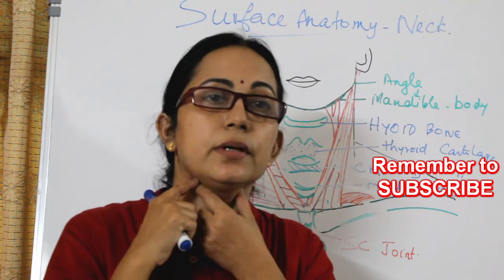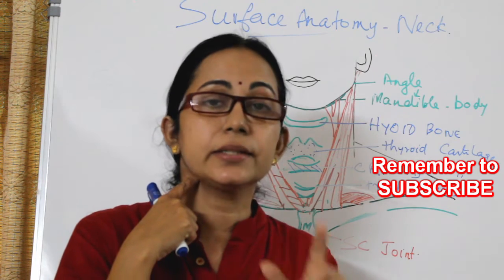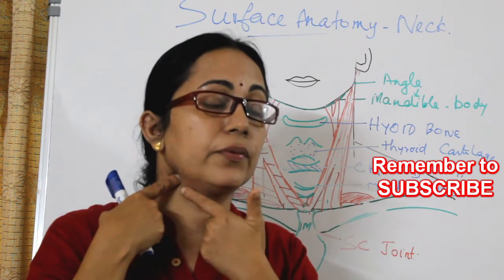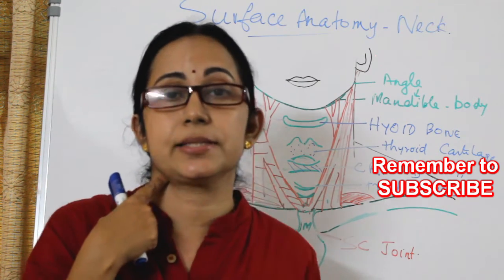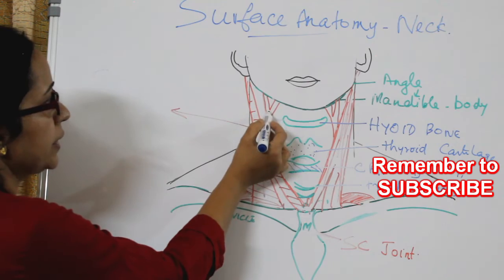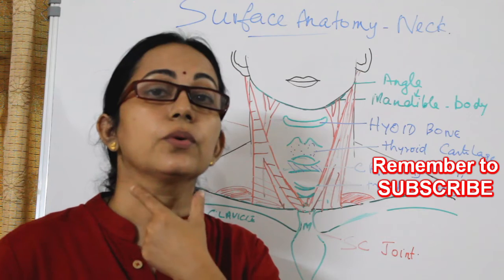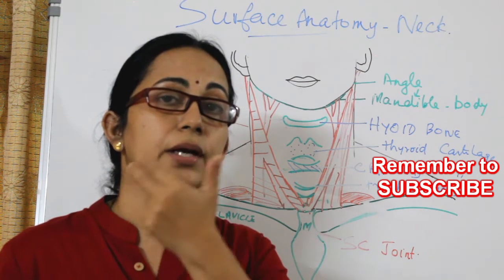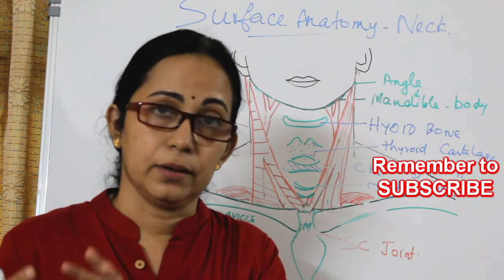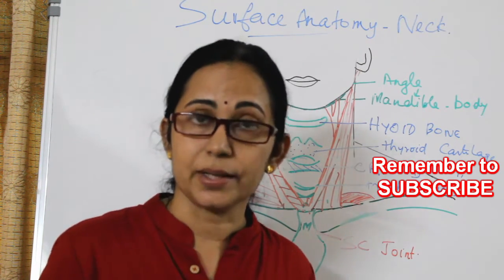Palpate your hyoid bone, and laterally you have the greater horn of the hyoid bone. This greater horn of the hyoid bone is an important landmark, because just at the level of the greater horn of the hyoid bone you will get a pulsation. That is the point where the common carotid artery divides into the internal carotid and external carotid. The internal carotid and common carotid have no branches in the neck.